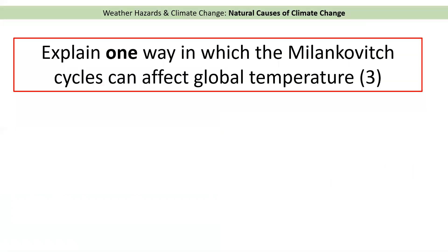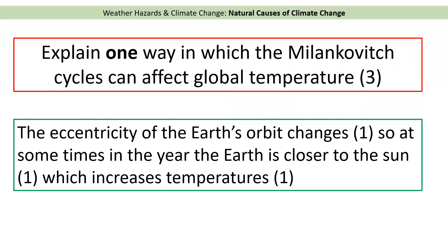Finally, here is an exam question from last year's GCSE: 'Explain one way in which the Milankovitch cycles can affect global temperature.' This is a three-mark question, so follow Point, Explain, Develop — PED. Pause the video and have a go now. A model answer would focus on eccentricity: the eccentricity of the Earth's orbit changes — that's your point. Sometimes in the year the Earth is closer to the sun — that's your explanation. Which increases the temperatures at those times of the year — that's your development. If you have any more questions, please speak to your teacher. Thank you.